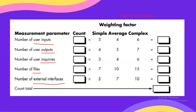If the number of user outputs is 15 and its weighting factor is average, then 15 will be multiplied with five. All these multiplied values are added together to find the count total. The first step in determining function points is finding the count total, which is calculated using the five measurement parameters and their weighting factors obtained from the software system.